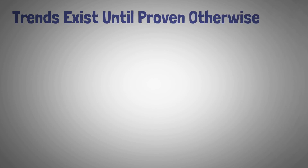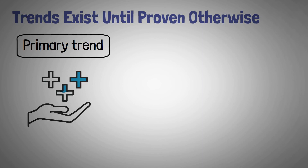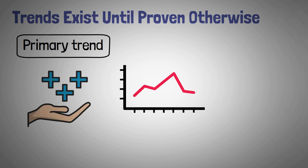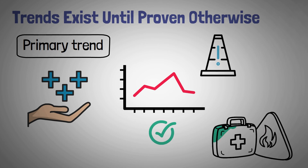The last tenet of Dow theory suggests that the primary trend should be given the benefit of the doubt. Trends exist even until definitive signals prove otherwise. In short, the market remains in a trend until an external force acts upon it.